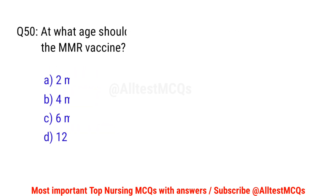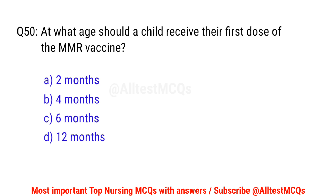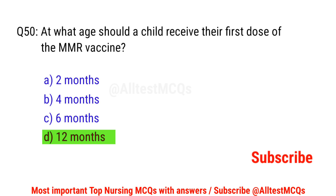Question number 50. At what age should a child receive their first dose of the MMR vaccine? The right option is D: 12 months.